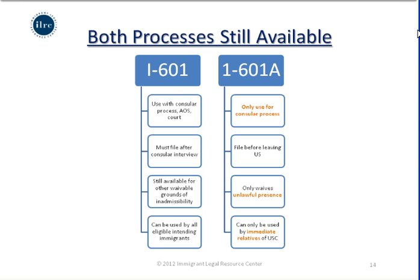Both waiver processes are still available. For the limited group of people who qualify to file an I-601A provisional waiver here in the United States, they can do so. For all others, the traditional I-601 filing is still available — for those with other grounds of inadmissibility, those filing in conjunction with an adjustment of status with USCIS or an immigration court, or anyone eligible for other waivers of inadmissibility.